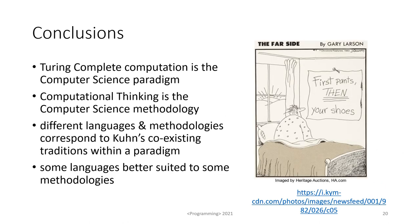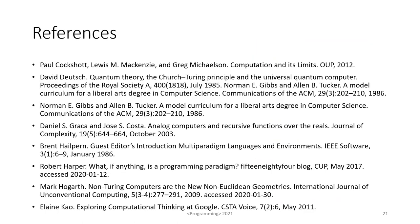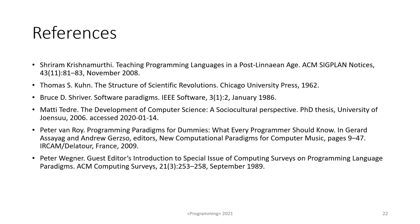To conclude: I think Turing complete computation is the computer science paradigm, and computational thinking is the computer science methodology. Different languages and methodologies are like Kuhn's coexisting traditions within the paradigm, and some languages are certainly better suited to some methodologies. Thank you. Here is a set of references mentioned in the talk; you can find the full set in the paper.